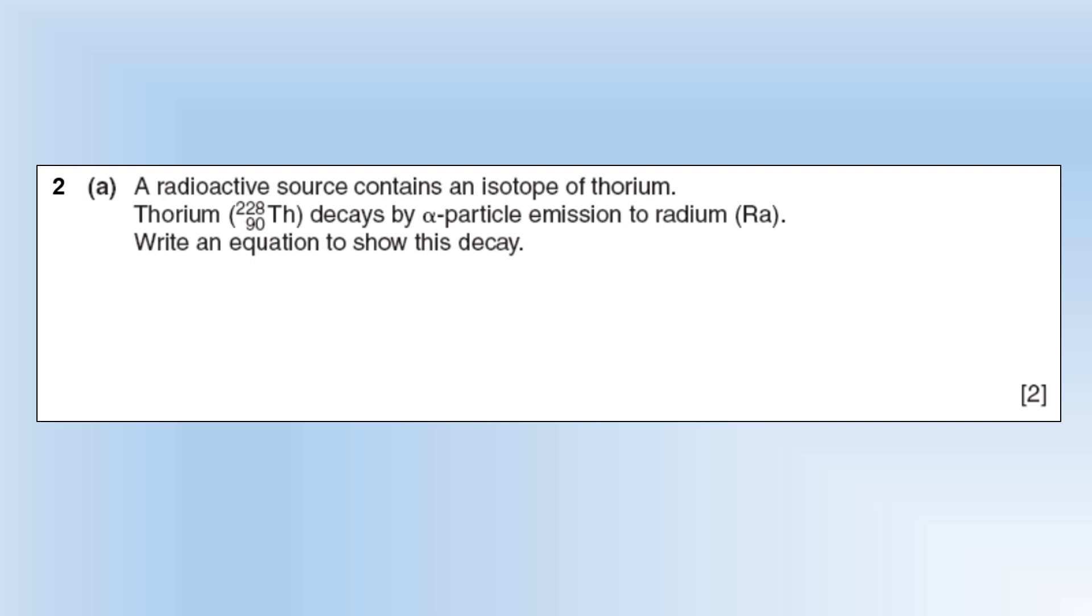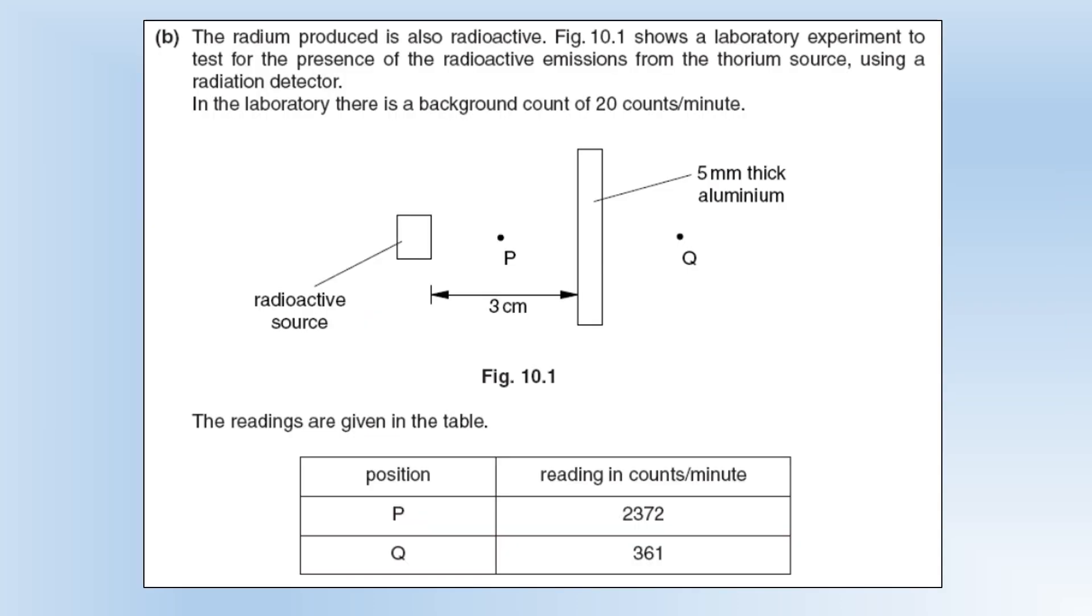We've got a radioactive source contains an isotope of thorium and thorium decays by alpha emission. It will be alpha because its proton number's greater than 82, which is kind of where we get the transition into alpha. Here is the decay equation for that. The key is on the top line: the nucleon number before and after is the same, and the proton number before and after is the same as well. They're 90 on both sides, so that's how we know it's correct.